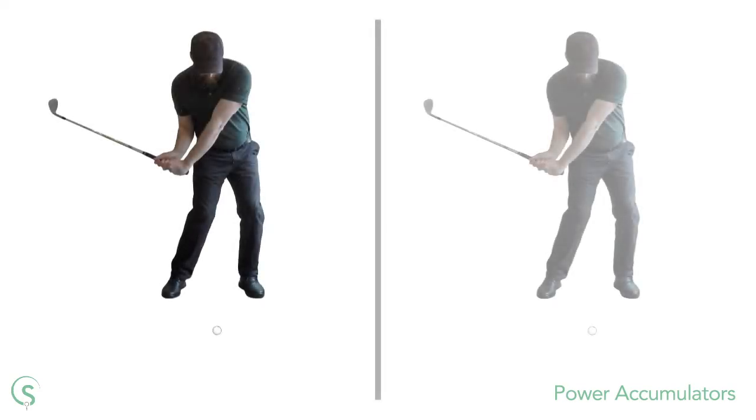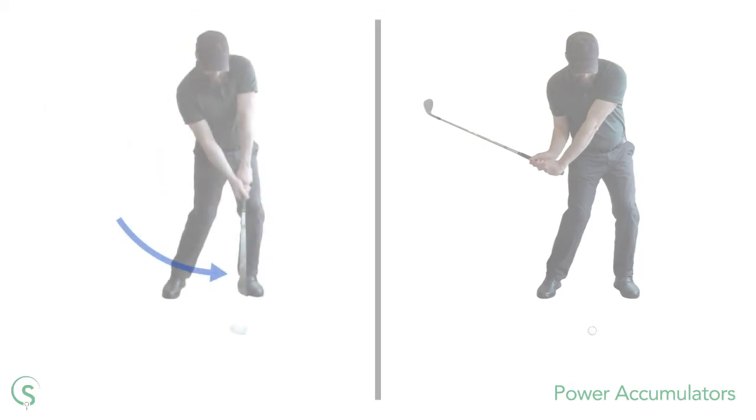There are two ways in which we can uncock the left wrist and release its stored power. The first is to do so manually. Here we use the muscles in our forearms or the straightening right arm, the first power accumulator, to push the club head away from ourselves and uncock the left wrist.